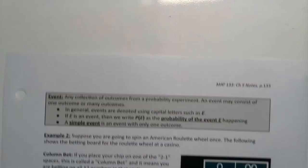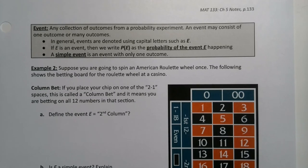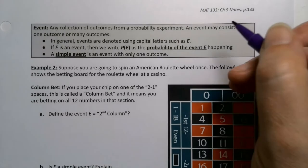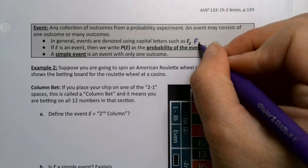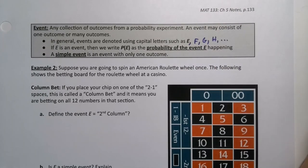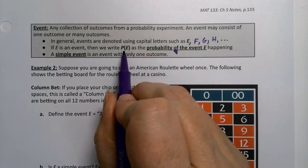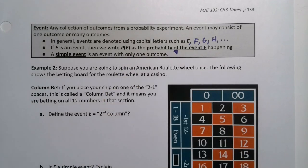Continuing on with our definitions, our basic definitions. The very important definition for us is an event. An event is any collection of outcomes from a probability experiment. An event may consist of one outcome or many outcomes. If it only has one outcome, it's called a simple event, and if it has many outcomes, it's not simple. Simple as that. It can be any letter. Usually capital E is a really common one, capital F is another common one. You can use F, G, H, etc., any letter you like. And P(E) is the probability of the event E. That's not multiplication, that's a probability, the probability of event E happening.